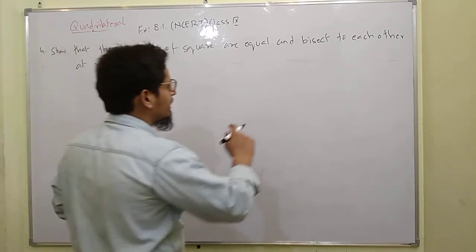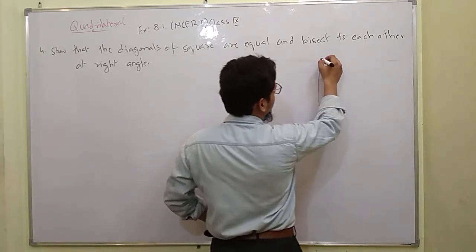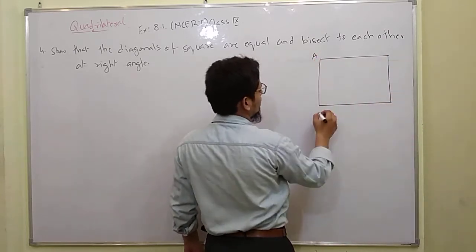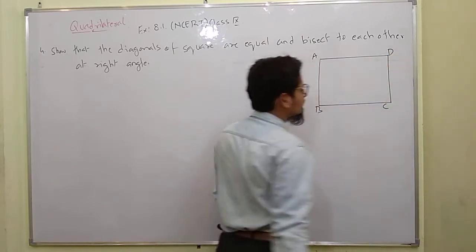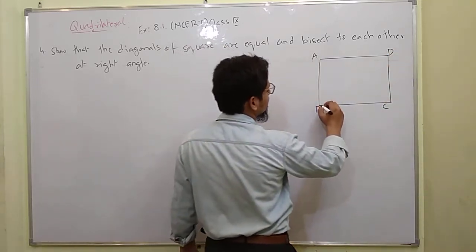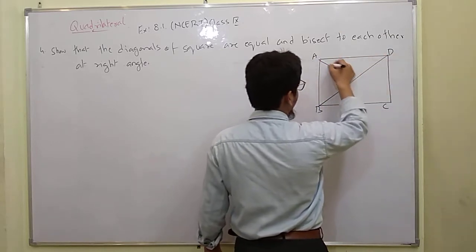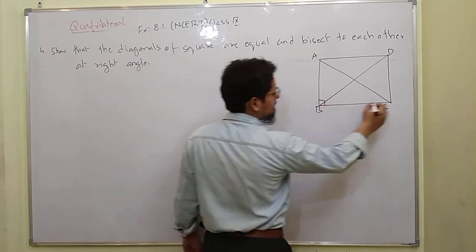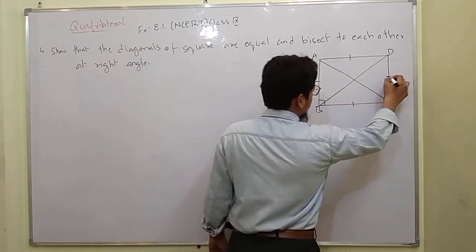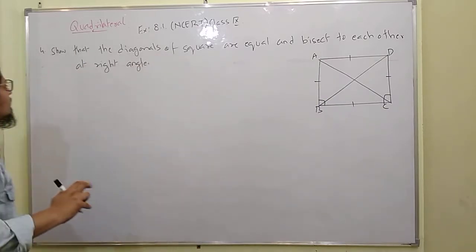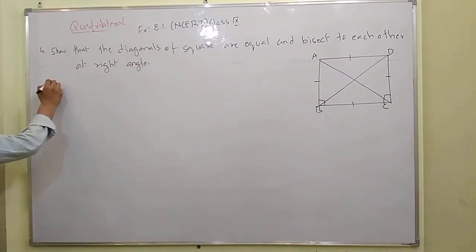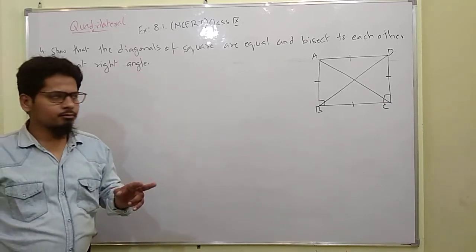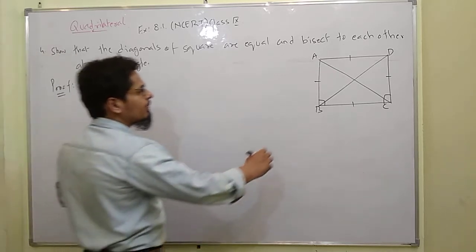Let's draw square ABCD with diagonals AC and BD. Since it is a square, each angle is 90 degrees and all sides are equal — we will use these two conditions. For the proof, first I will prove the diagonals are equal to each other. For this, I take two triangles.